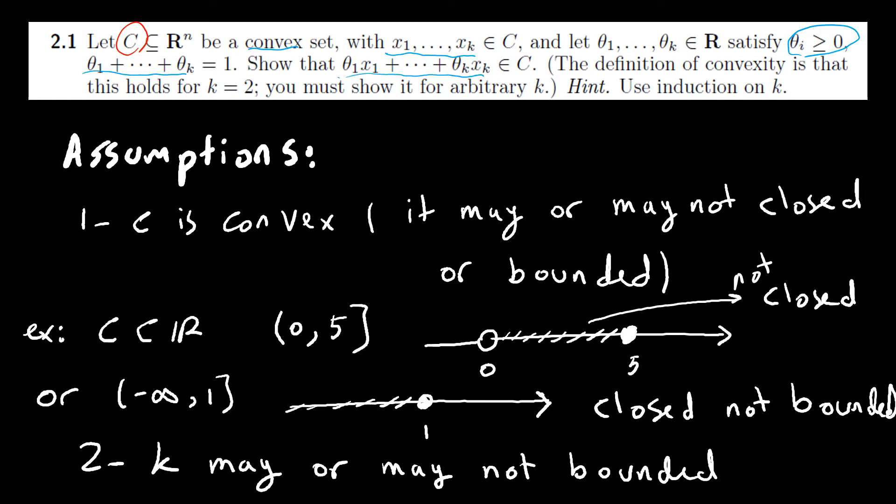Let's see what are the assumptions. The assumption in this problem is convexity of C. It doesn't say the set C is closed or bounded. By closed I mean a set that has closed boundary. That means every sequence you take from the set is back in that set.